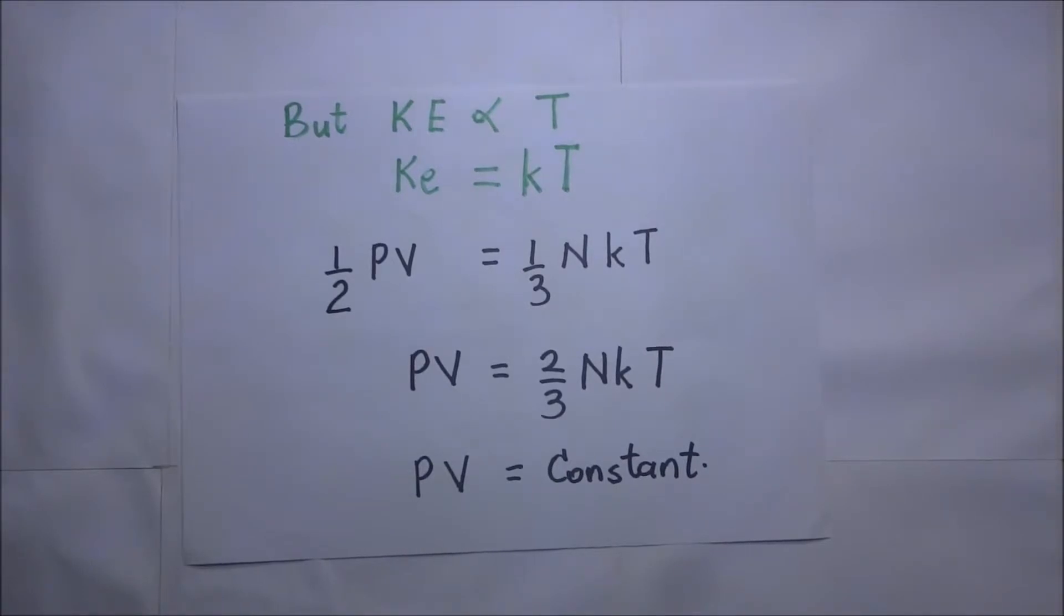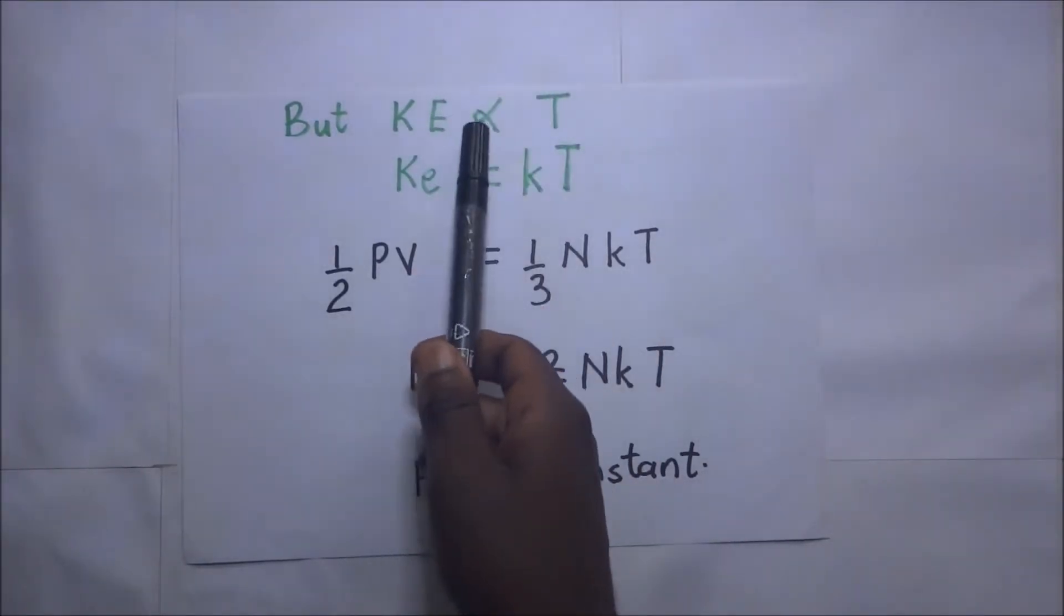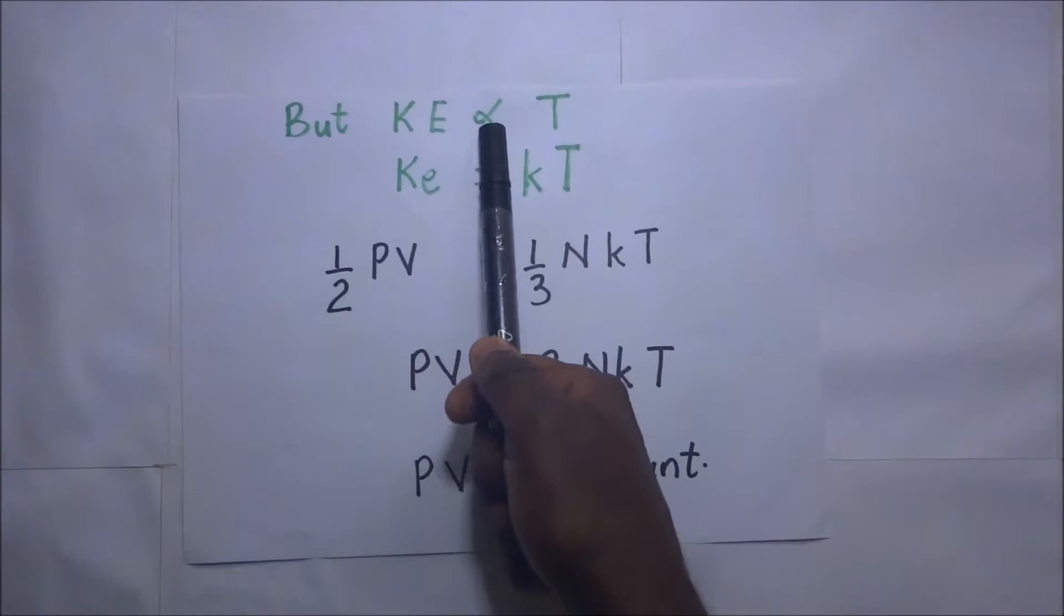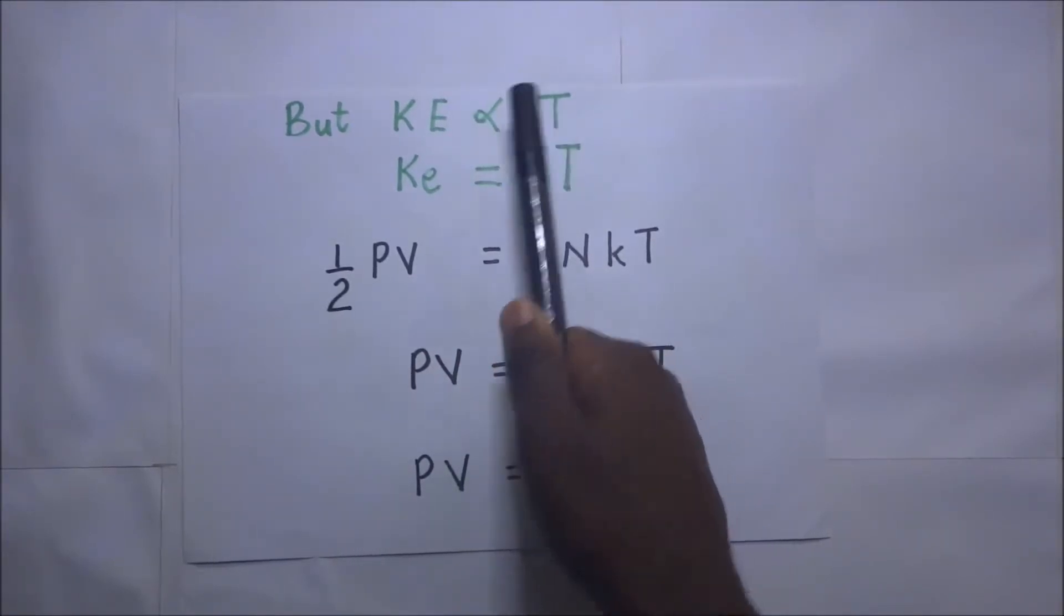one of the postulates of the kinetic theory states that kinetic energy is directly proportional to temperature. So meaning that if kinetic energy is directly proportional to temperature according to one of the postulates of the kinetic theory, it means that